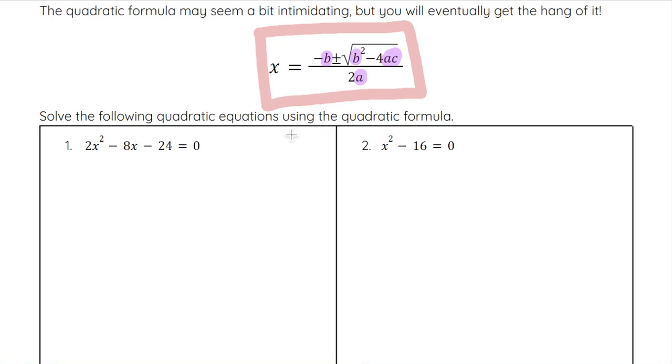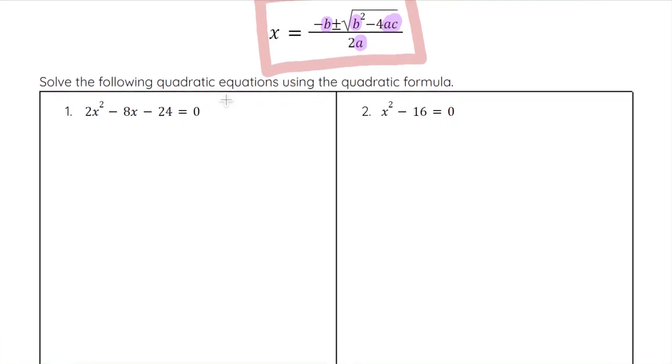The key things you'll need to know are a, b, and c. Once you do it once or twice, you'll see it's not as bad as it looks. Looking at number one, we have 2x squared minus 8x minus 24 equals zero. First thing you always have to do is get zero on one side if it's not already done.